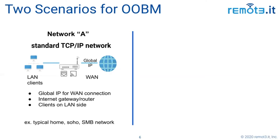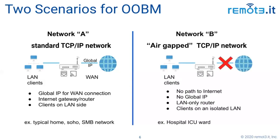On the left, Network A — this is very typical. You have a global IP address probably assigned by your ISP to your home or office router on the WAN side, and then that router offers Ethernet and Wi-Fi connections to different clients. This is the very typical network configuration we all have in our homes and offices.